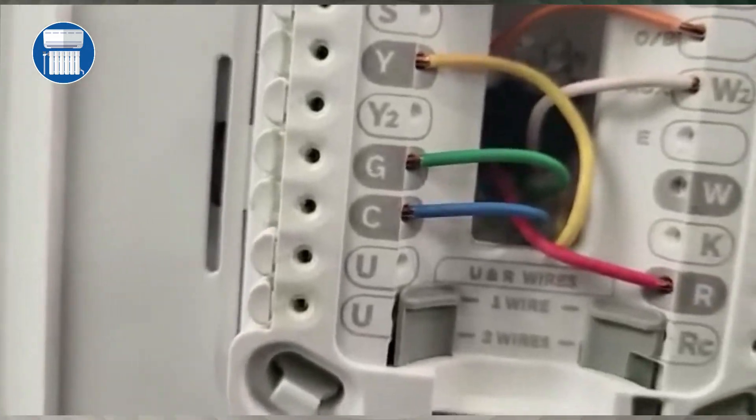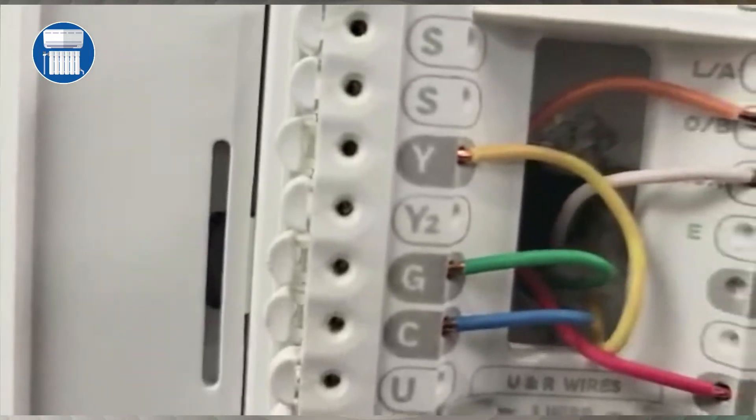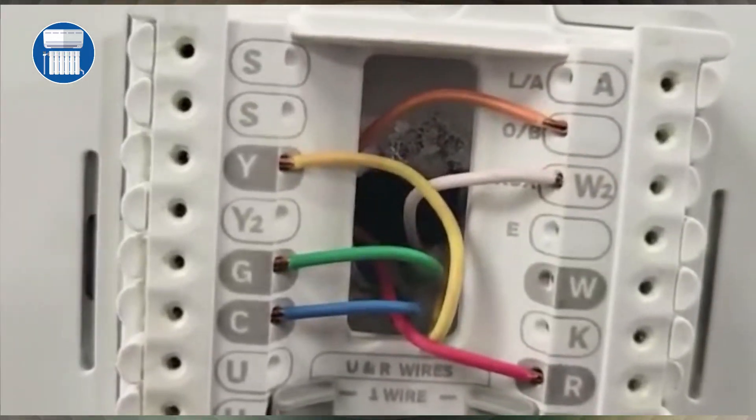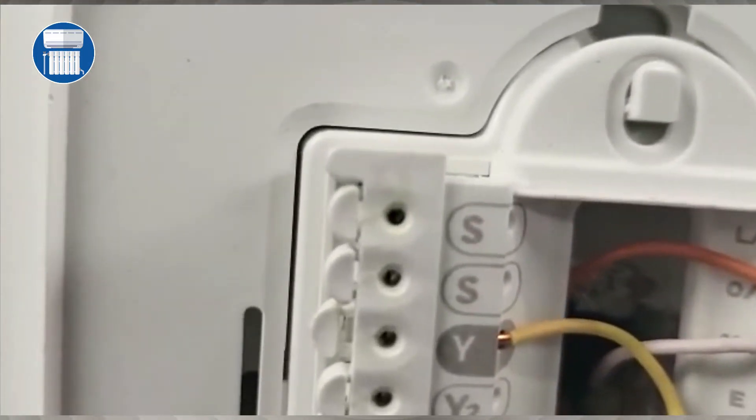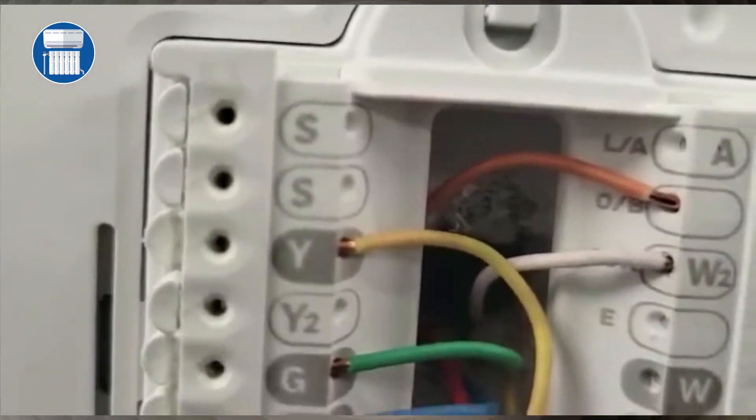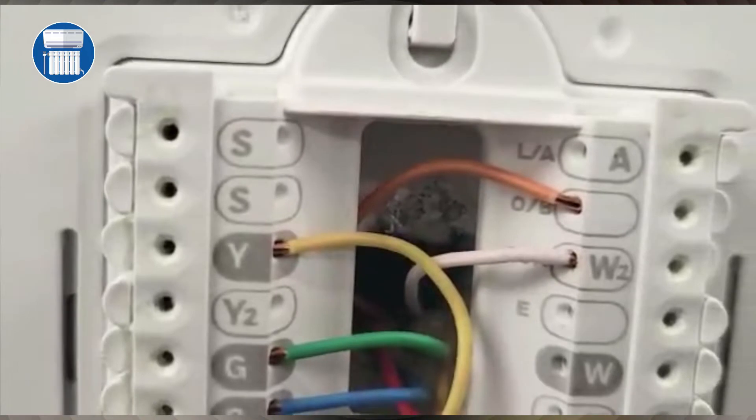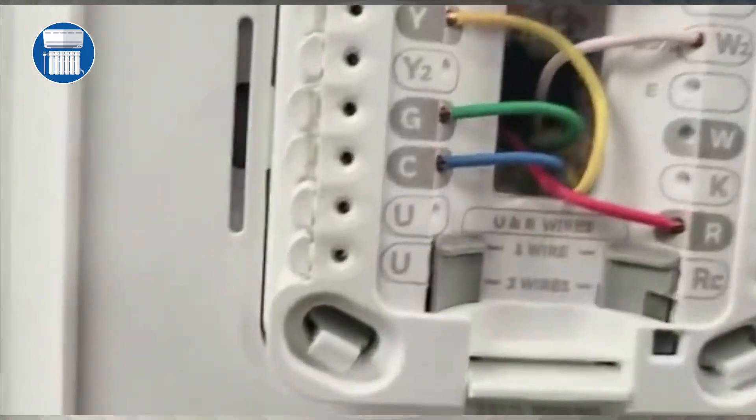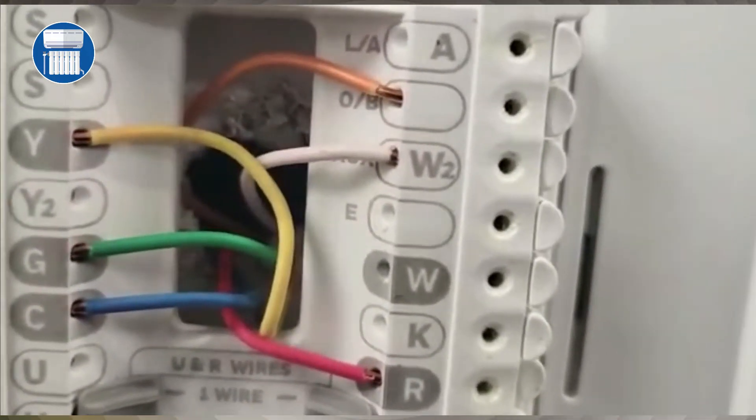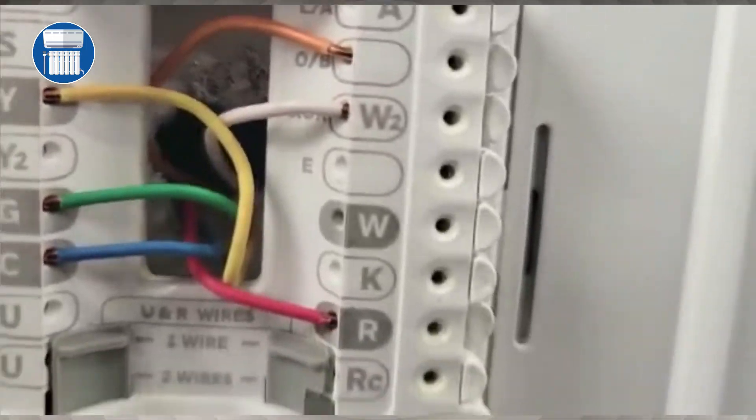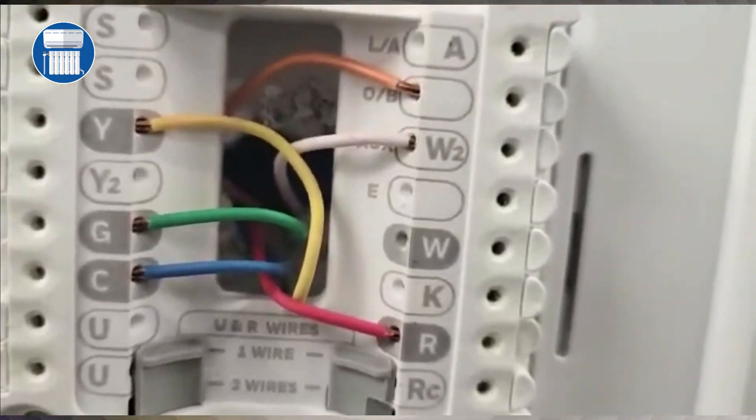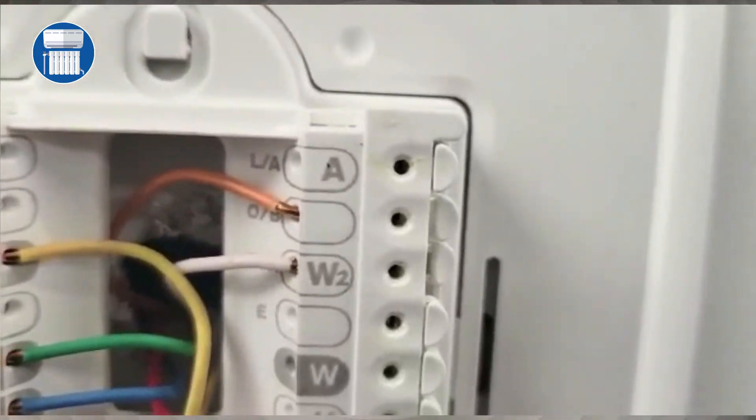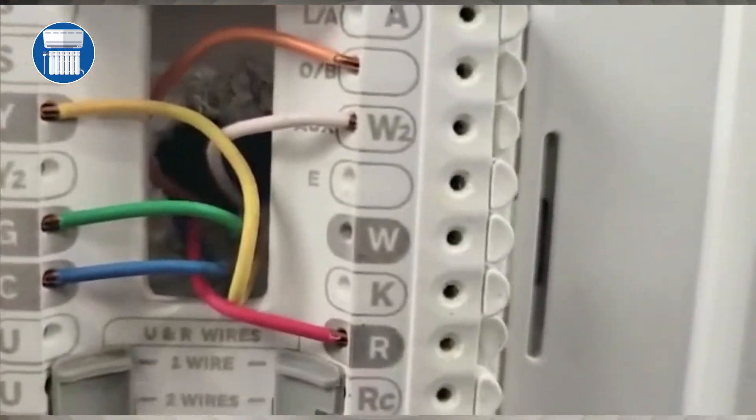Next, do your green wire. That is your fan, so connect that green wire to the green terminal on your thermostat. Then do your yellow or Y terminal. That is for your cooling. In this instance it has a two-stage, so we have it on W2. But if you have a one-stage system, you could put your white wire for your heat on W.